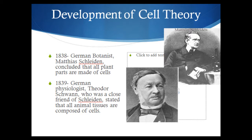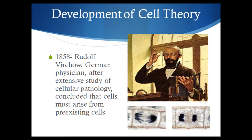The next person responsible for coming up with the next tenet of cell theory is Rudolf Virchow. He was a German physician who did an extensive study with cellular pathology — the study of disease — trying to figure out how diseases spread. We knew it's not going to come from spontaneous generation because you have to have life to get life, and cells are obviously alive. So what he concluded was that cells have to arise, or have to come from, pre-existing cells. You get cells from other cells.